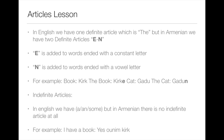Articles lesson: in English we have one definite article which is 'the', but in Armenian we have two definite articles: E and N. E is added to words ending with a consonant letter, while N is added to words ending with a vowel. For example, 'book' is 'kirk', so 'the book' is 'kirke'; 'cat' is 'gadu', so 'the cat' is 'gadun'.